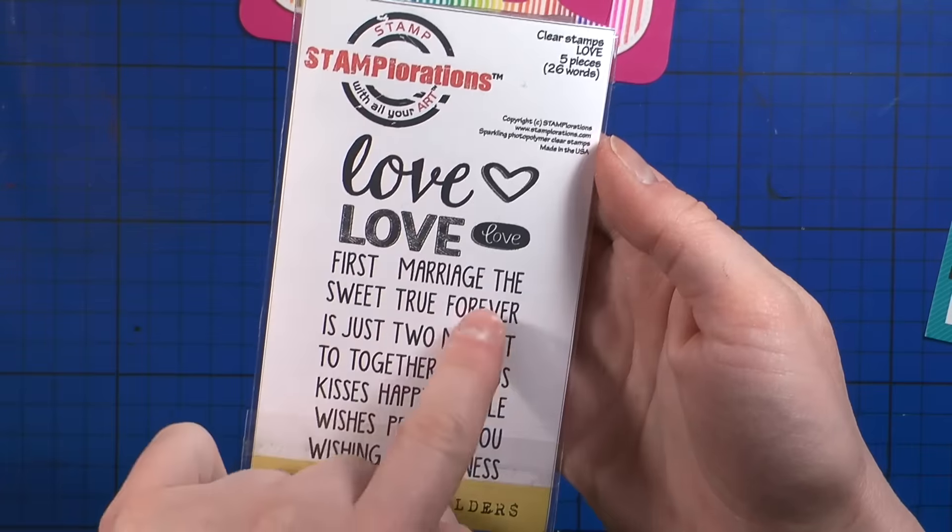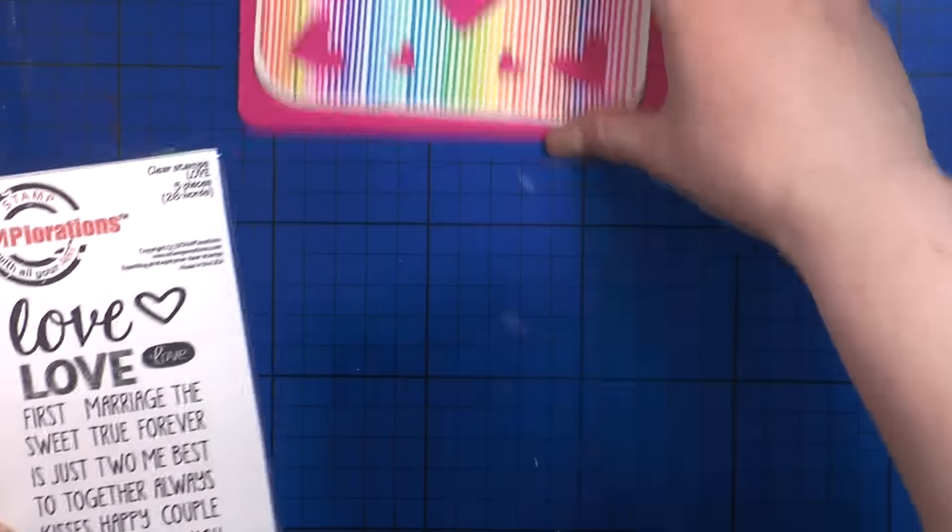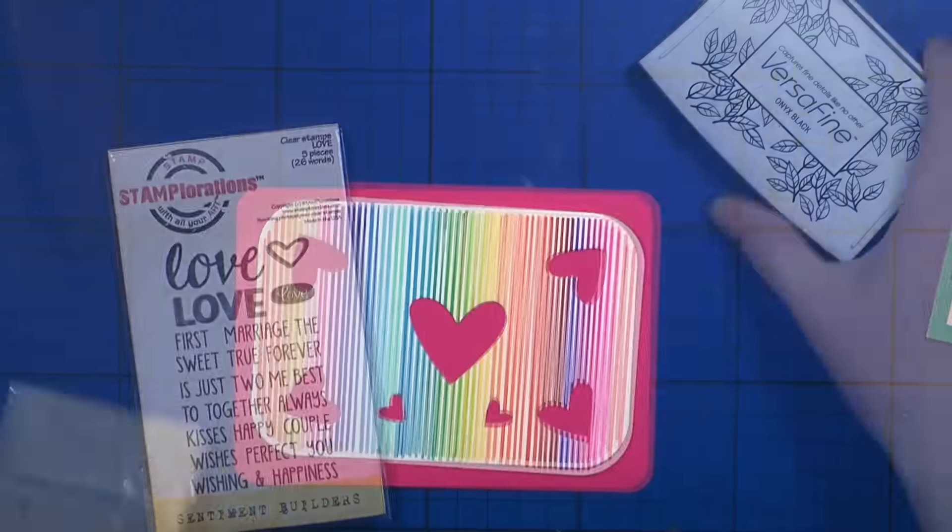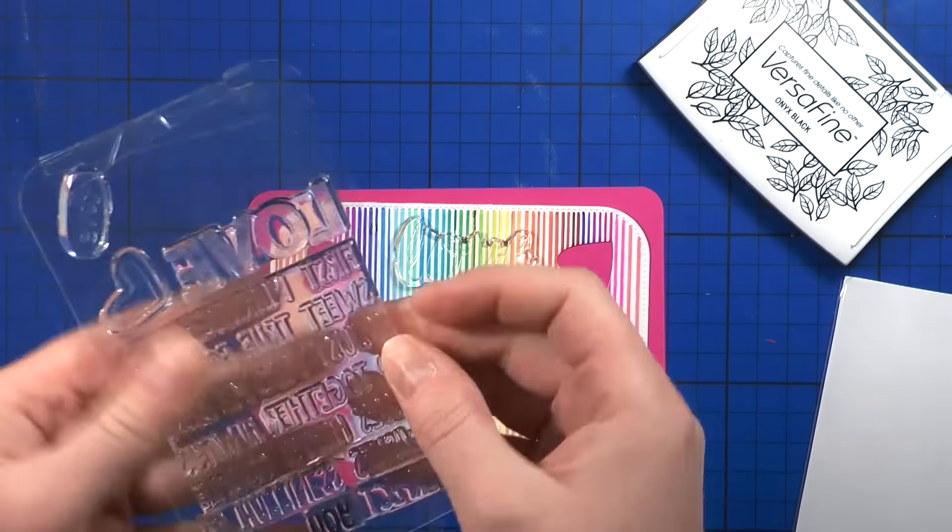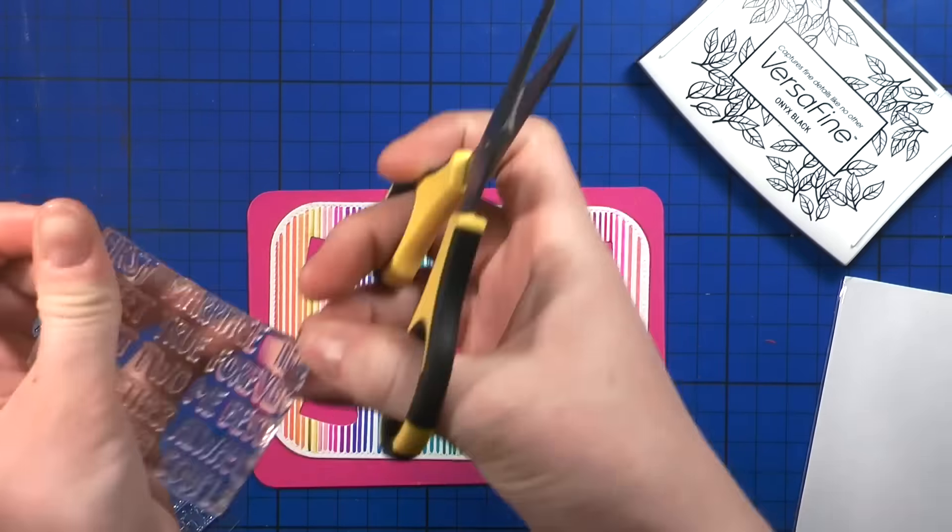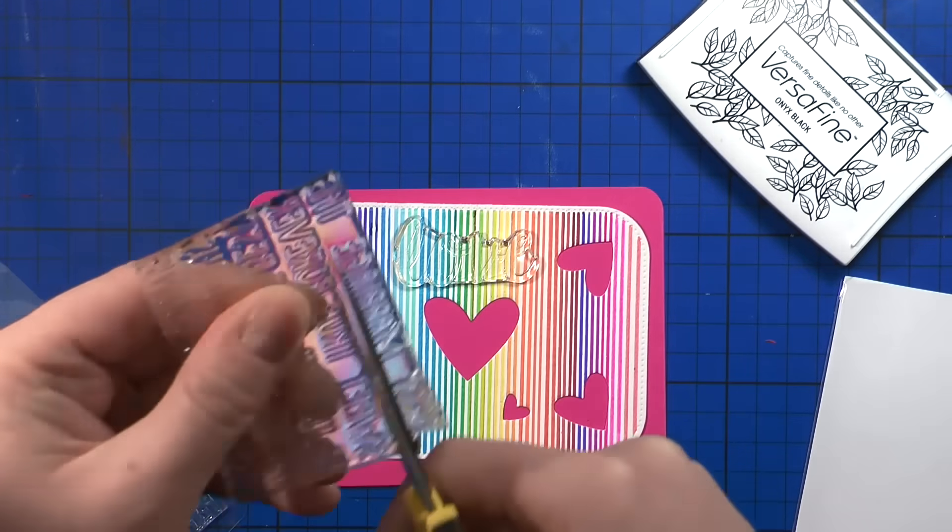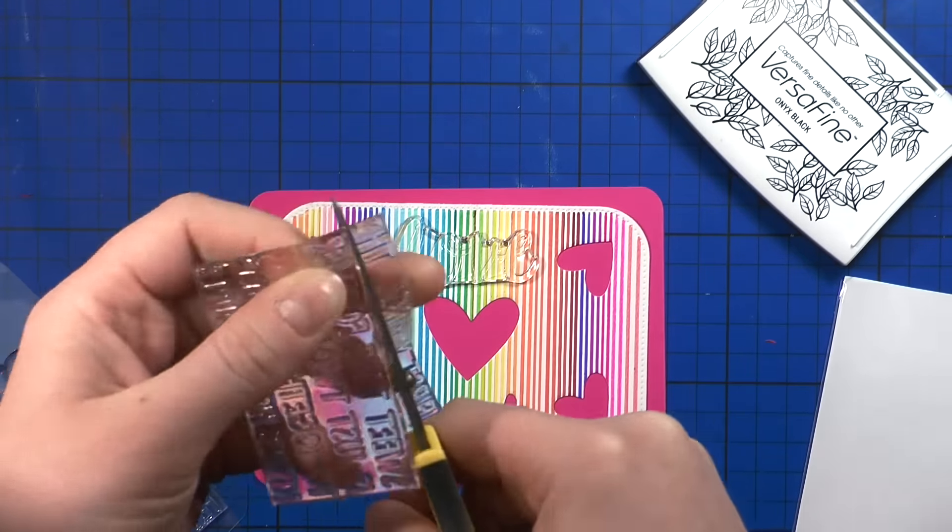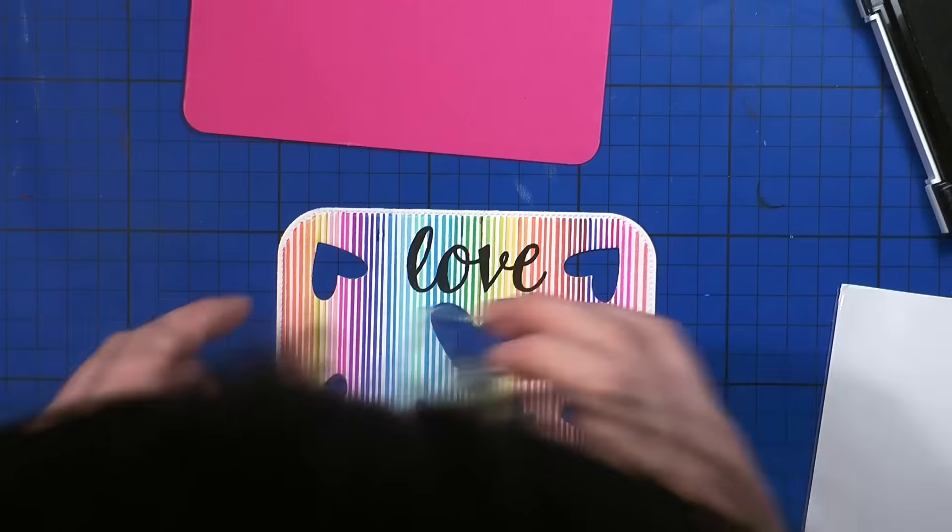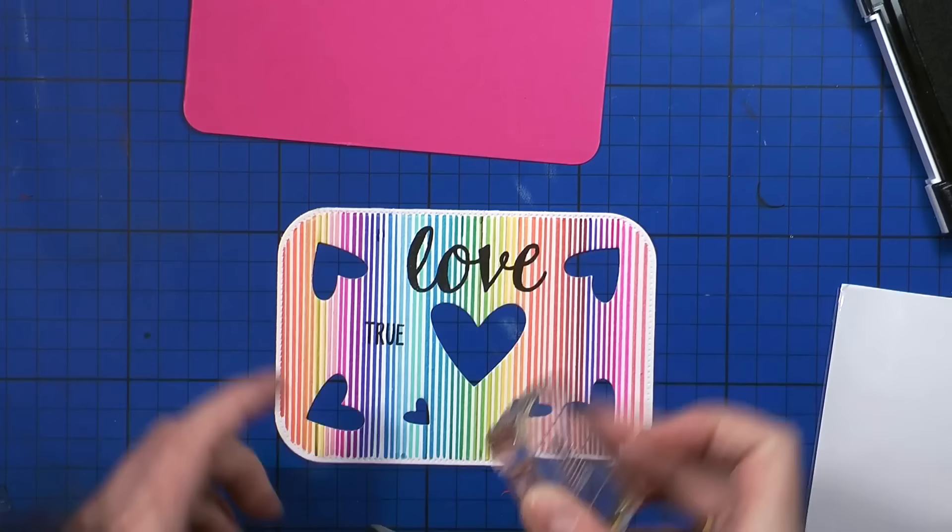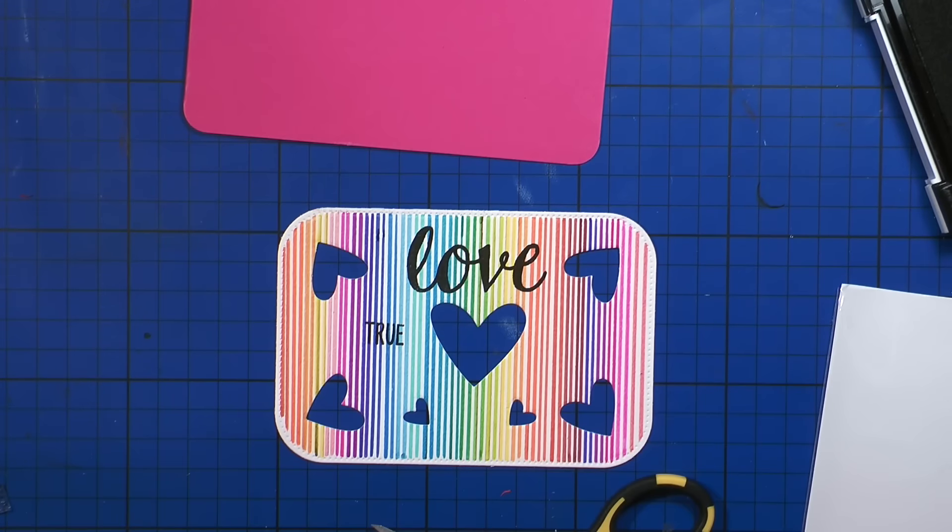And now I'm going to work on my sentiments. I'm using this Templarations beautiful stamp set called Love. And it's a sentiment builder. So there's a few separate words of love, and then many additional ones that you have to cut apart yourself, as you can see me do now. And then you can build sentiments. So for this card, I went with True Love Forever. And I stamped the Love using VersaFine Black Onyx ink.